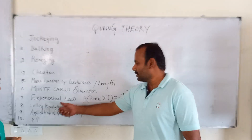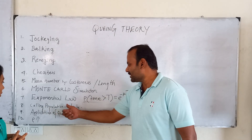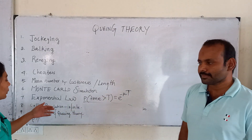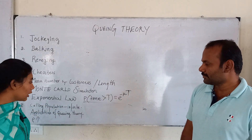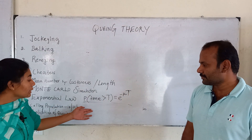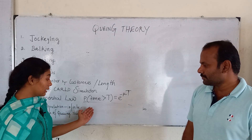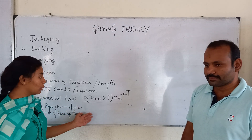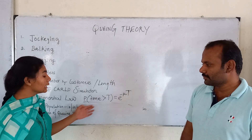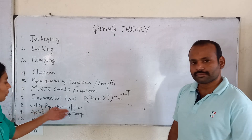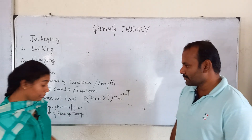What is calling population infinite? Calling population is infinite. Arrival distribution is independent. Arrivals are independent to each other. So, calling population is infinite.